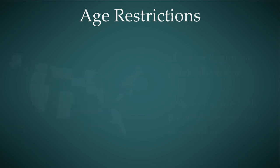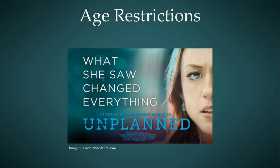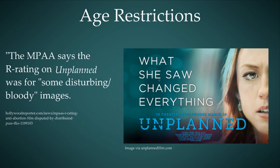I want to contrast that with a movie that came out just a couple months ago called 'Unplanned.' If you haven't heard about it, this movie is about a Planned Parenthood worker, Abby Johnson, who eventually quit and became a pro-life activist. Because of a few scenes where they in some way show an abortion, this movie got an R rating — and an R rating means you can't see it unless you're 17 or older, or you're at least with someone who is.